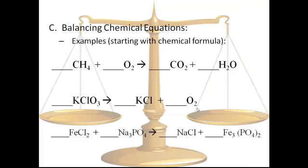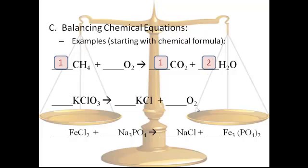A couple examples. First, with CH4, pick the element that shows up the least — maybe carbon. Start with carbon: you have one carbon on the left and one carbon on the right, so those are balanced already. Now check your H's: you've got four on the left and two on the right. To get an equal amount, we'd want to double the hydrogens on the right. Now we've got four hydrogens on both sides.